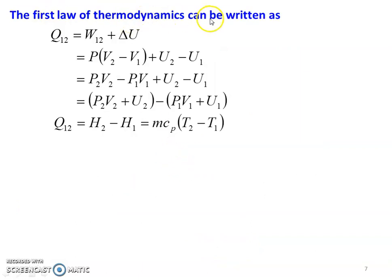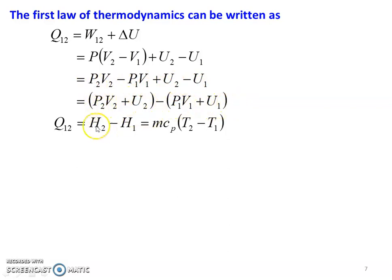For heat transfer using the First Law: Q12 = W12 + ΔU, where W12 = P(V2 − V1) and ΔU = U2 − U1. Rearranging: Q12 = P2V2 − P1V1 + U2 − U1 = (P2V2 + U2) − (P1V1 + U1) = H2 − H1. So for a constant pressure process, heat transfer equals change in enthalpy: Q12 = MCp(T2 − T1).